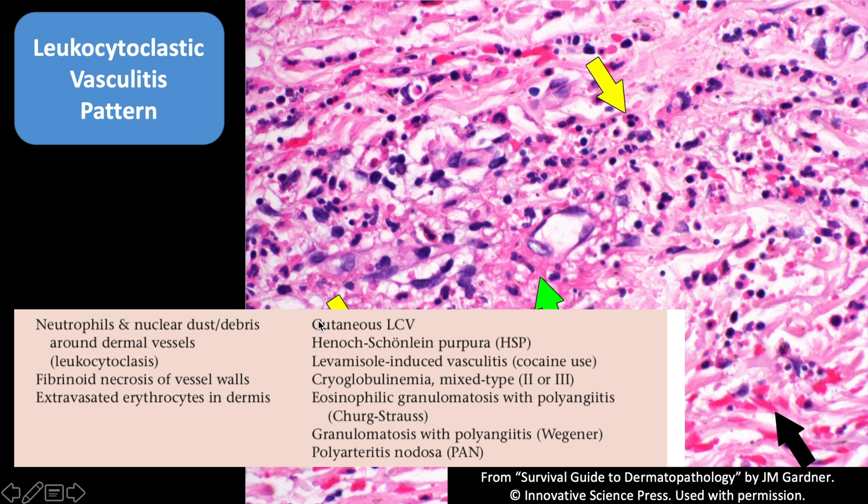There's a list of vasculitis types — most of them can look relatively similar microscopically, with some subtle clues. I have a whole vasculitis 101 video if you want to delve into this. But it's important to keep in mind that once you tell the treating physician vasculitis, they will initiate further clinical and laboratory workup to identify which specific type the patient has.